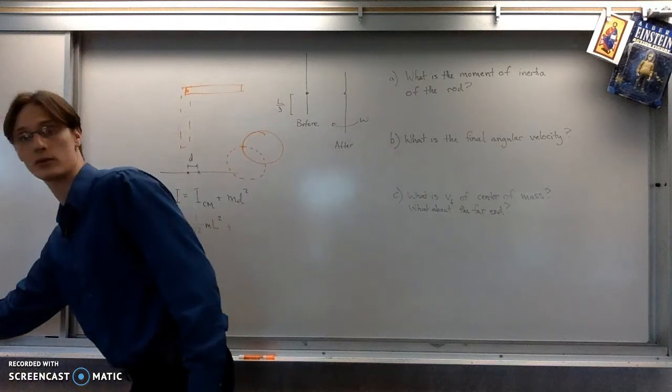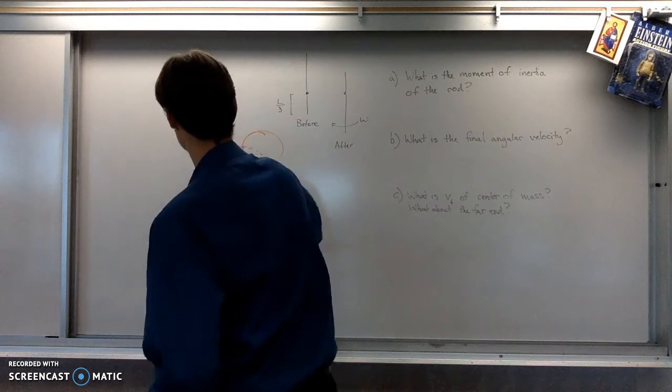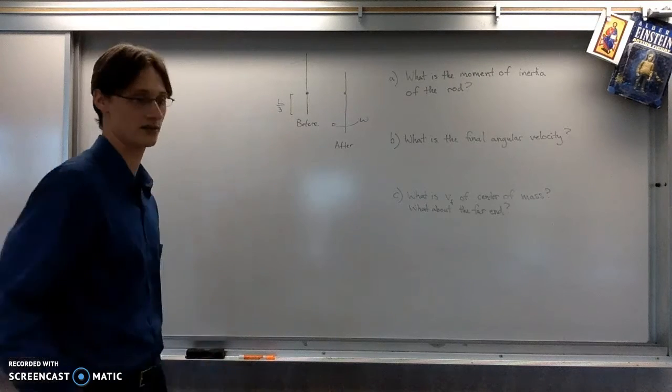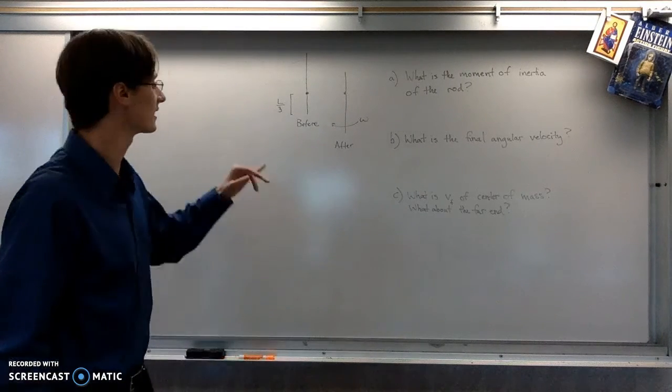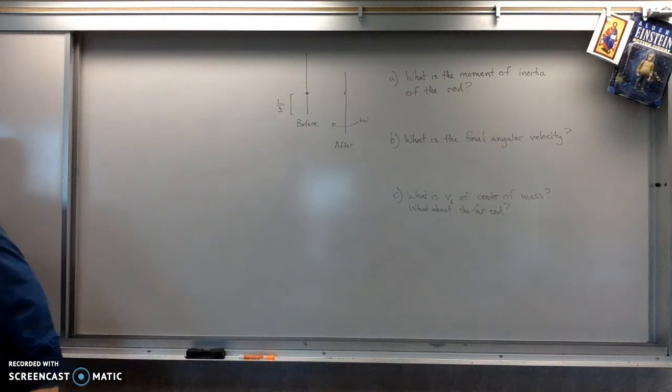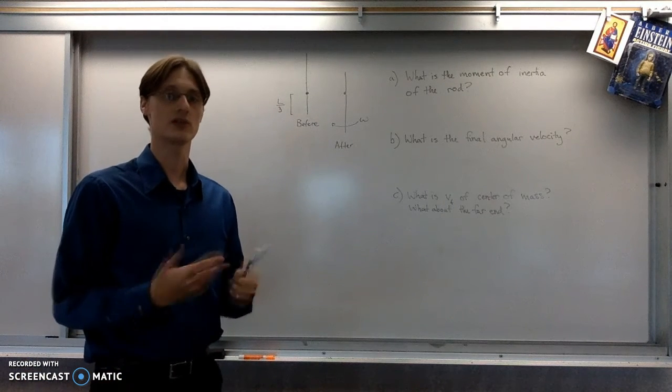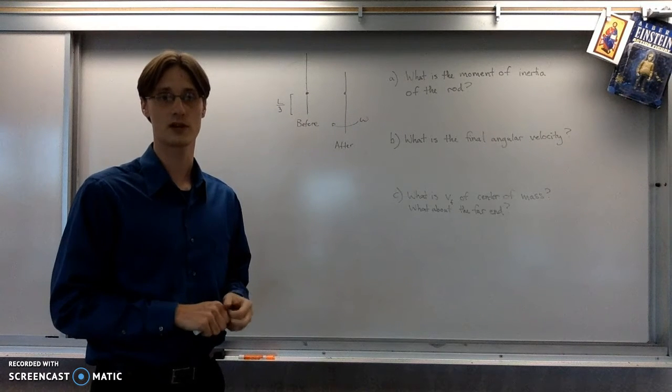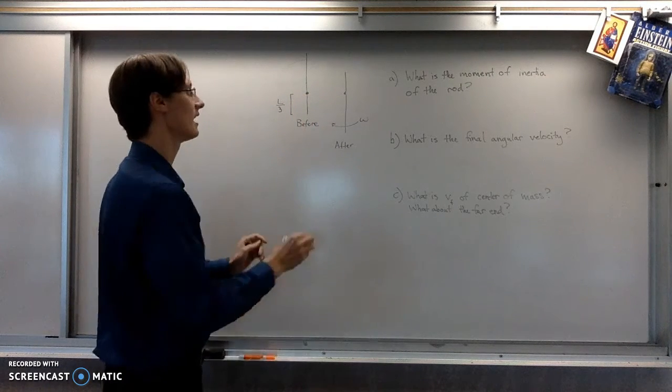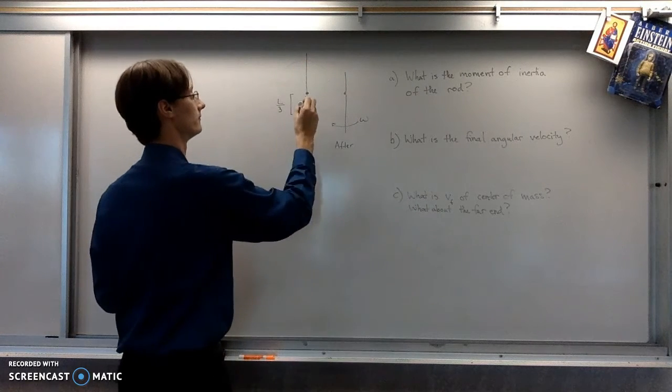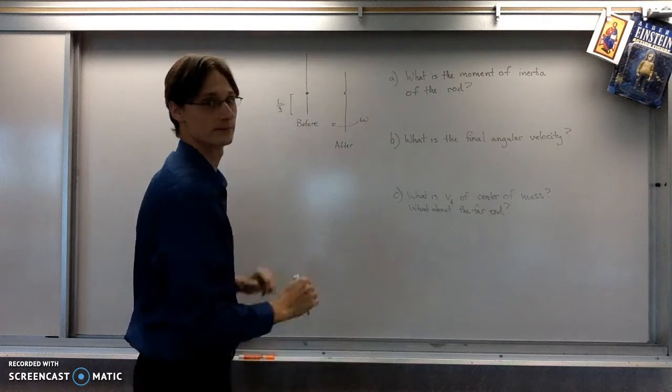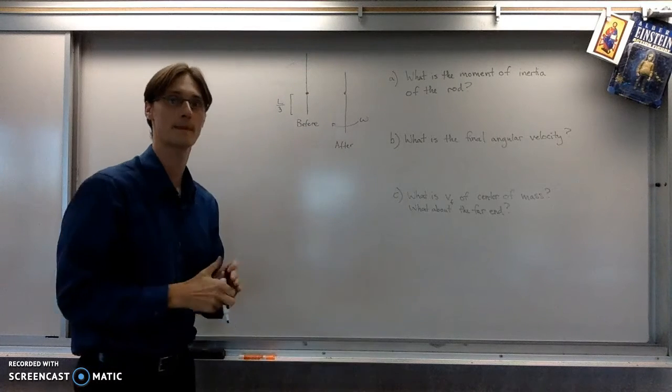The specific example that we're going to work out is this one right here. So I drew a very simplified picture of a rod. And I'm saying that it's going to pivot about this point L over 3 from the end. We've done that question in class a bunch of times, but I figured it wouldn't hurt to do it again. And I didn't want to do the exact same question that you're going to have on the homework. So it's pivoting about this point that's L over 3 from the end. And I'm going to have it go from this vertical orientation to this vertical orientation. So it's swinging around like that.